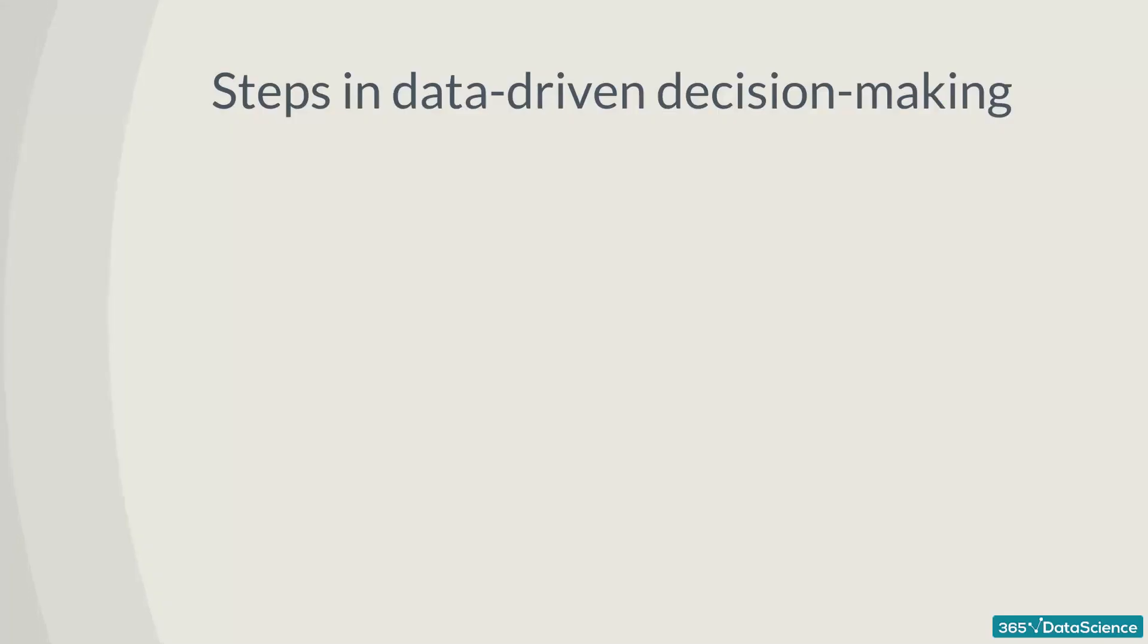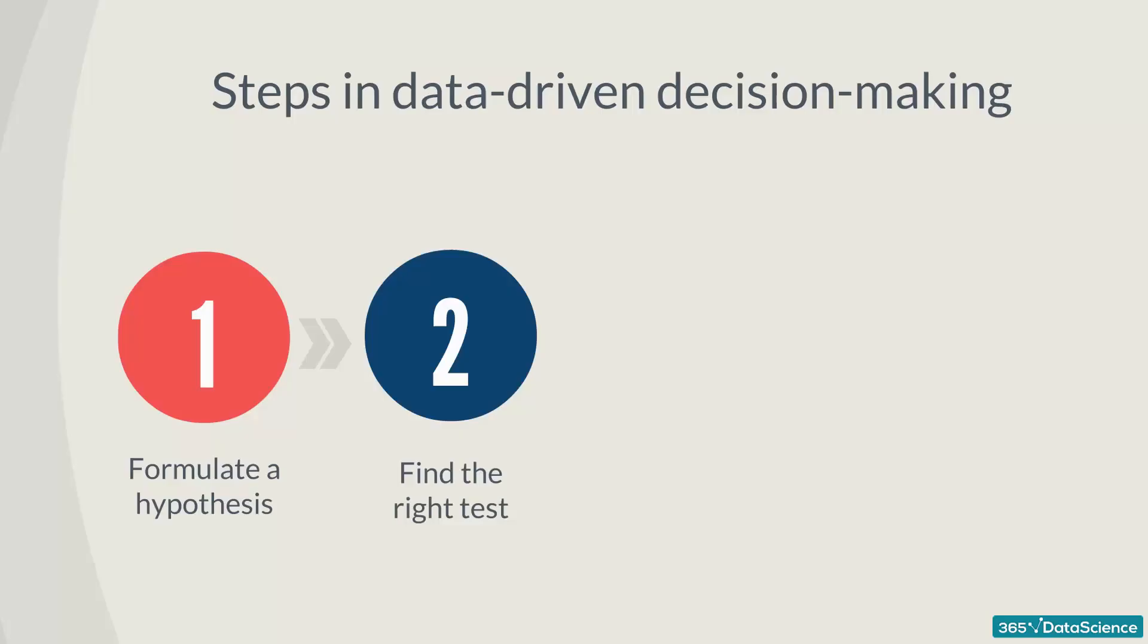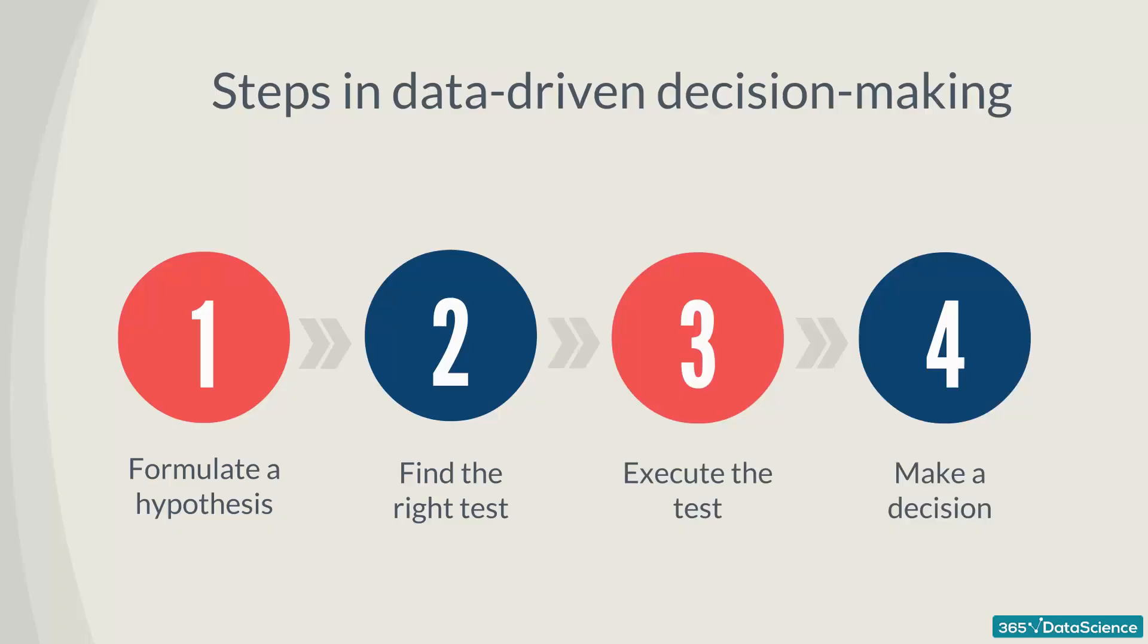There are four steps in data-driven decision making. First, you must formulate a hypothesis. Second, once you have formulated a hypothesis, you will have to find the right test for your hypothesis. Third, you execute the test. And fourth, you make a decision based on the result.